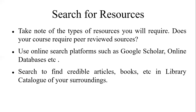Search to find credible articles, books, and other materials in the library catalog of your surrounding institution. For example, agriculture universities, engineering universities, and medical science universities each have their own online catalog. One example is issilibrary.org.tk, which provides an online catalog where you can find research articles, books, newspaper articles, and reports relevant to your subject, such as international relations and social sciences.